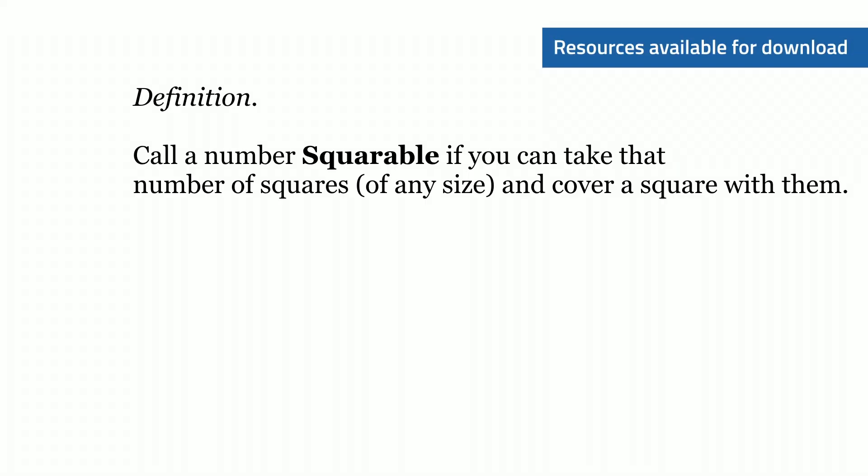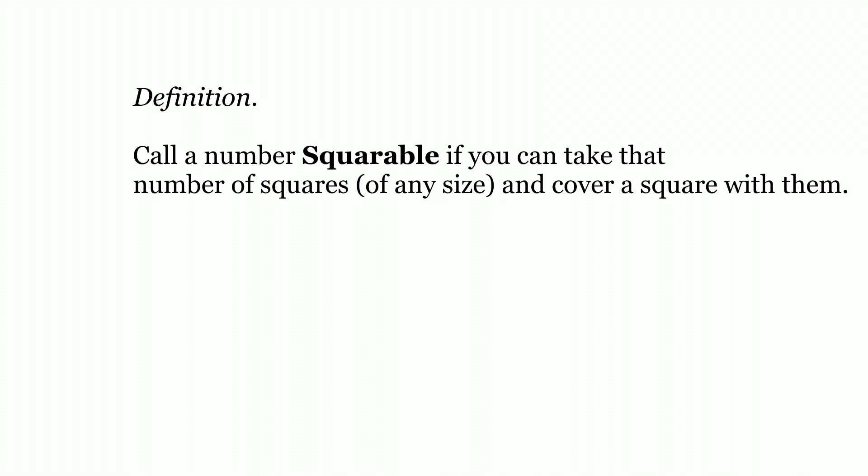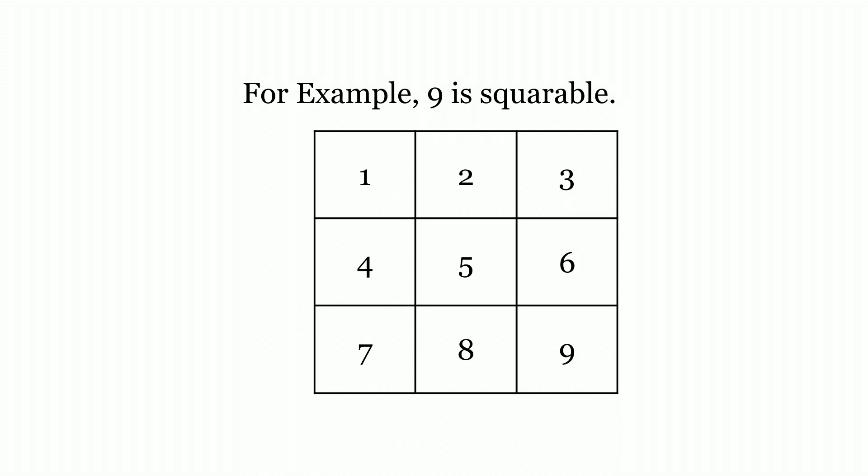To launch, we define what squarable means. This isn't an important mathematics word, but it's useful for us today. A number is squarable if you can take that many squares and assemble them to form a larger square with no overlaps or holes. For example, 9 is squarable because we can take 9 squares and build a bigger square out of them.